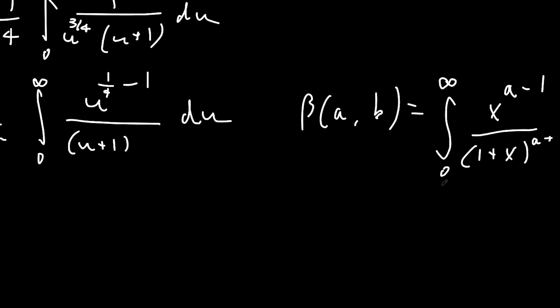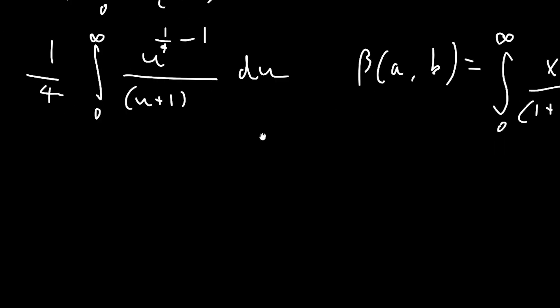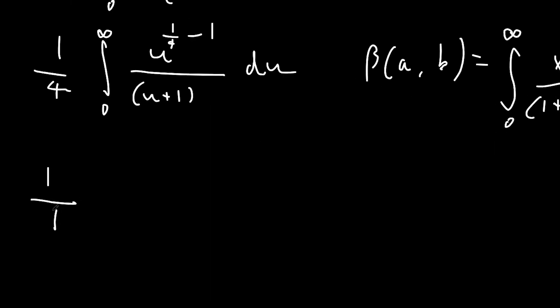So with what we have here, you can see that our a would be a quarter, and then for a plus b to be 1, then b would be 3 quarters. So we have a quarter times beta of a quarter and three quarters.